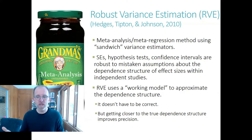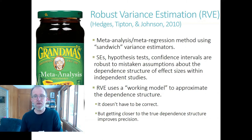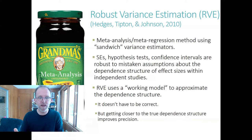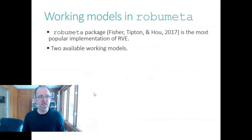RVE involves what is called a working model that approximates the dependence structure of your effect sizes. It's called a working model because it doesn't have to be correct — that's the whole point of using RVE in the first place. But using a working model that's close to the truth helps because it gives you more precise estimates of average effect sizes or meta-regression coefficients. The most popular implementation of RVE is from the RoboMeta package for R, which has two built-in working models, but as I'll explain, both of these working models are limited and a bit inflexible.